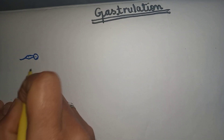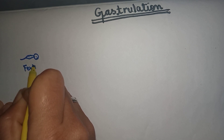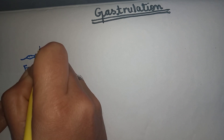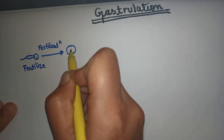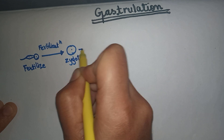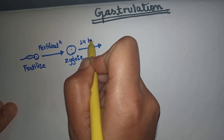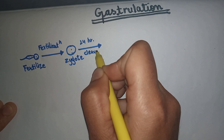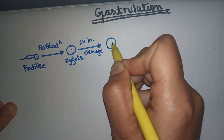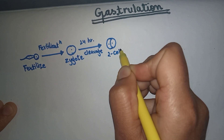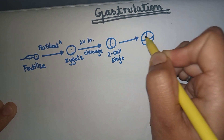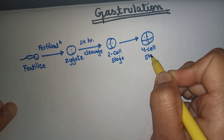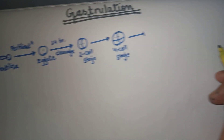First of all, in gastrulation there is fertilization — sperm and egg get fertilized by the process of fertilization, which leads to the formation of a zygote. After 24 hours of fertilization it leads to cleavage, which is the 2-cell stage. The 2-cell stage is proceeded by the 4-cell stage, and the 4-cell stage is proceeded by the 8-cell stage.